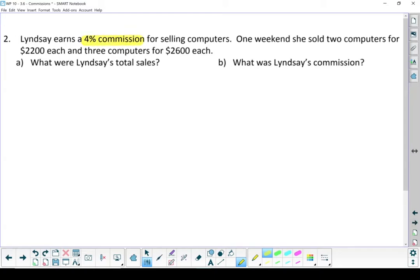She earns a 4% commission rate. And then she sold two computers for $2,200 and three computers for $2,600. Questions we want to know: What were her total sales? And then what was her commission? Now that's commission in dollars. Let's start by figuring out her sales.